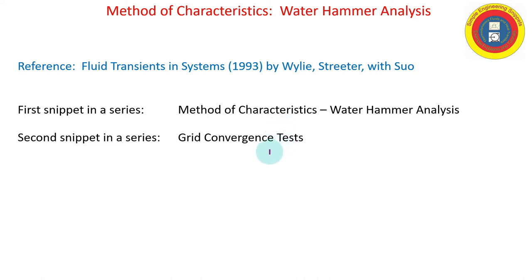Not often in method of characteristics do we see grid convergence tests, but there's a lot of academic papers denoting whether or not their scheme is first order or second order accurate. And that is important.